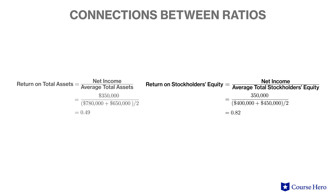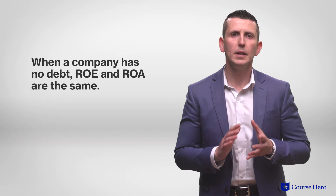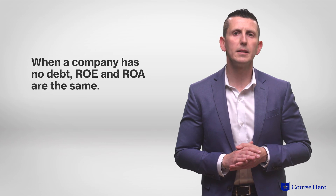It is important that you see connections among all these ratios. The numerator in the return on assets ratio is the same as the numerator in the return on equity ratio. However, the denominator in return on equity is equity, which is a subset of assets — the denominator used for return on assets. Therefore, return on equity will be higher than return on assets. How much higher depends on how much debt the company has. Only if a company has no debt whatsoever will return on equity and return on assets be the same.